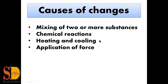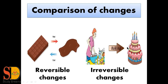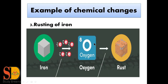Now we have the causes of change — that is, what reasons cause these changes around us. First is mixing of two or more substances. For example, baking a cake: we mix many ingredients like sugar, chocolate, milk, etc., and make a new substance. So the cause of the change is mixing of two or more substances. Next we have chemical reaction. As with rusting of iron, there is a chemical reaction between iron and moist air, which brings about a change in the iron. So chemical reaction is also a cause of changes around us.